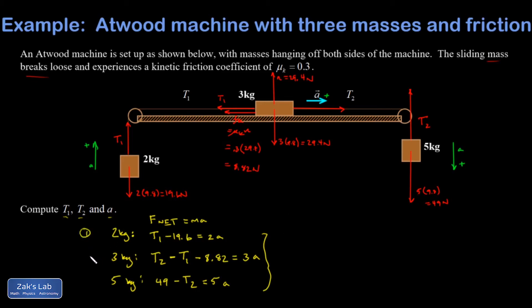I'm taking equation one and adding it to equation two. And when I do that the T1's eliminate and I end up with T2 minus 19.6 minus 8.82 is equal to 5a. So I should go ahead and combine the constants there.